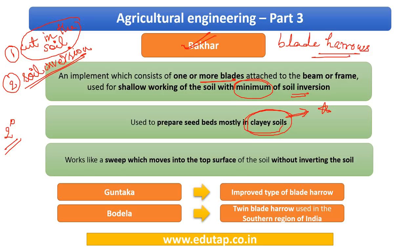The guntaka is an improved type of blade harrow. You could get a question asking which of the following is a type of blade harrow, so knowing these names is important. The bodela is a twin blade harrow used in the southern region of India.